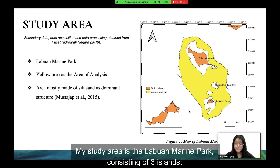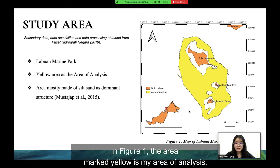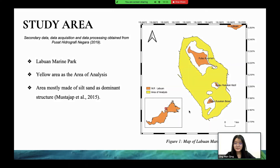The study area is Lapu Marine Park, consisting of three islands: Pulau Kuraman, Pulau Rusukan Kecil, and Pulau Rusukan Besar. In Figure 1, the area marked in yellow is the area of analysis.